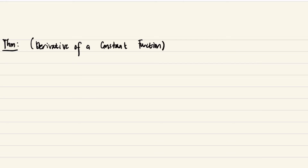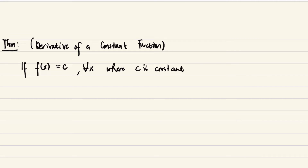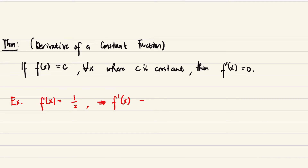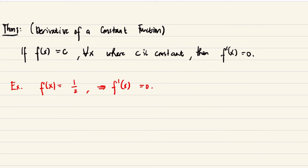The first theorem is the derivative of a constant function. It says that if f(x) equals c for all x, where c is a constant, then f′(x) is equal to zero. Meaning, if your function is just a constant, then its derivative is zero. For example, f(x) = 1/2, so f′(x) = 0 because 1/2 is a constant.